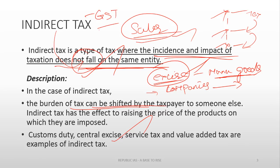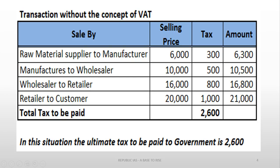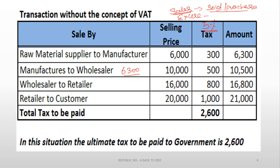GST is an indirect tax. Before GST, India already had indirect taxation. To understand why GST was needed, you need to know the background of taxation. Sales tax is a tax on products which are sold — when a purchaser buys a product, tax is levied on it. Excise duty is a tax on manufactured goods. These were two important indirect taxes playing a major role in India's taxation system.